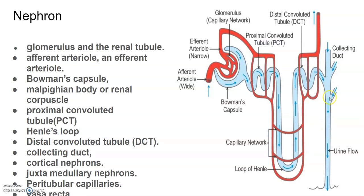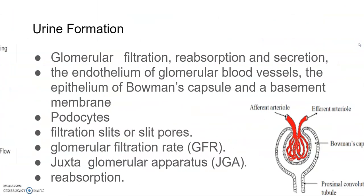Many collecting ducts converge and open into the renal pelvis through the medullary pyramids of the kidneys. The Malpighian corpuscles and various parts of the nephron are situated in the cortical region of the kidney, while the loop of Henle is too short to extend only a little into the medulla.